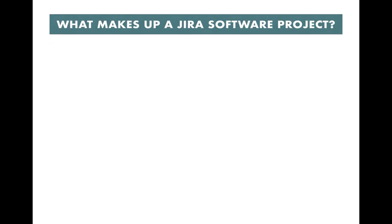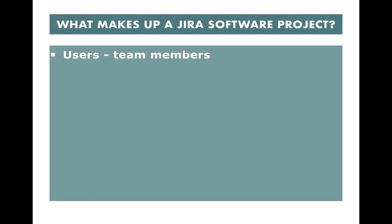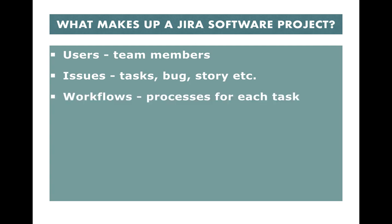Now, what makes up a Jira Software project? A Jira project consists of users — any project, whether software, core, or IT helpdesk, consists of team members. The second component is issues. All projects in Jira will have some issues like tasks, stories, bugs, and subtasks. The issues might vary depending on which version of Jira you're using, but issues will be common across all projects.